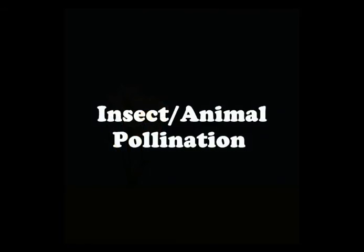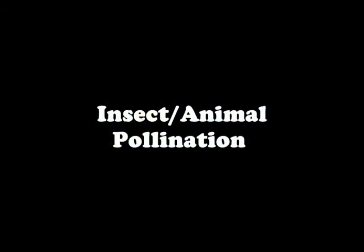Insect or animal pollination is the second of the two ways being shown here. It's defined by an animal or insect feeding on a flower and spreading the pollen as it feeds on other plants.